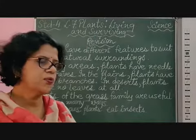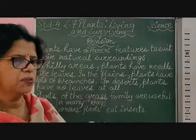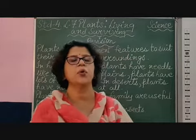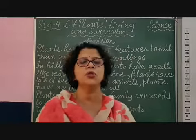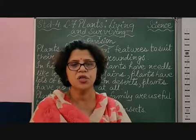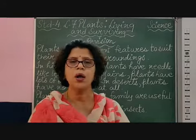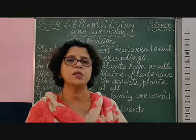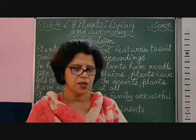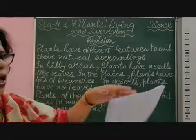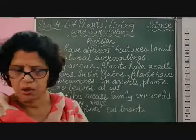So children, these plants grow in different regions — mountain, plain, desert, hot and humid, or marshy regions — and they are all called terrestrial plants, because they grow on land. Next, we studied about plants that grow in water. These are called aquatic plants. Aquatic plants include fixed plants, underwater plants, and floating plants.